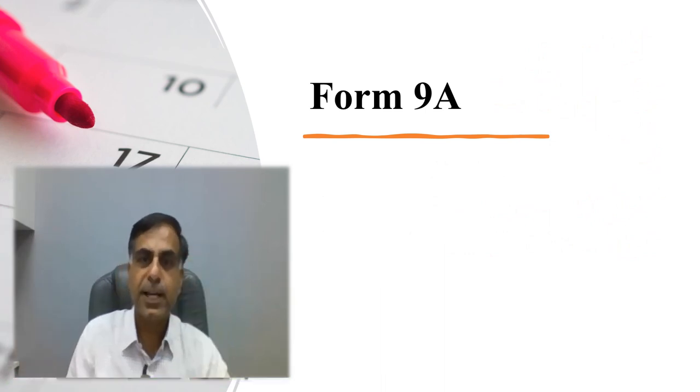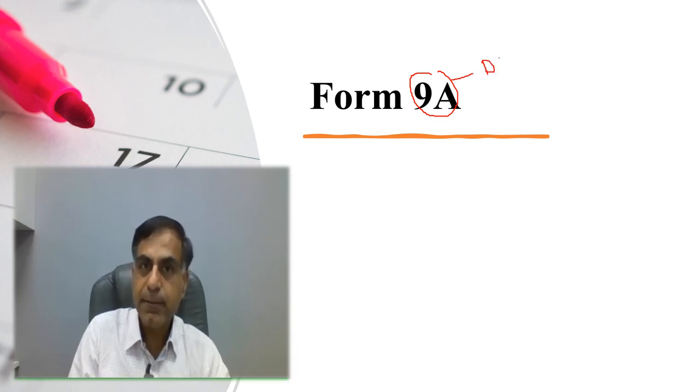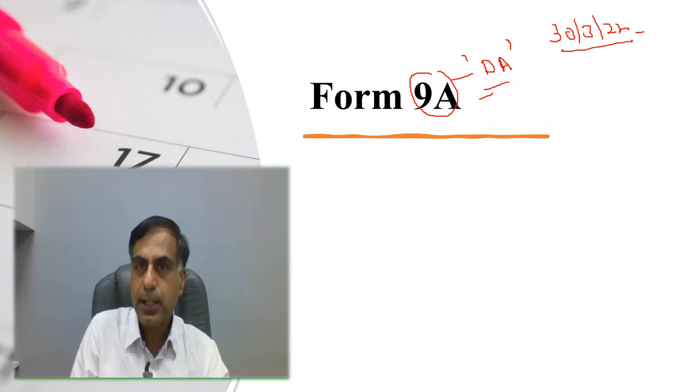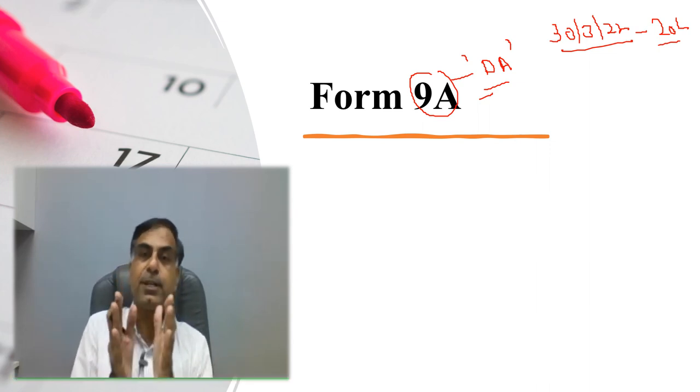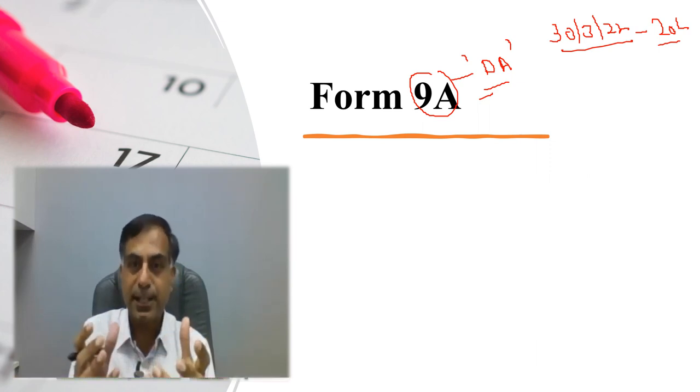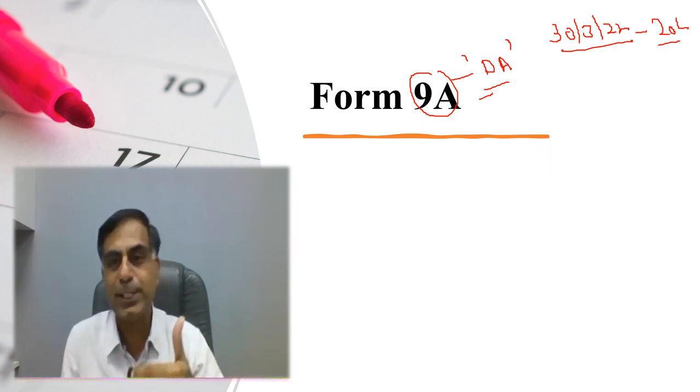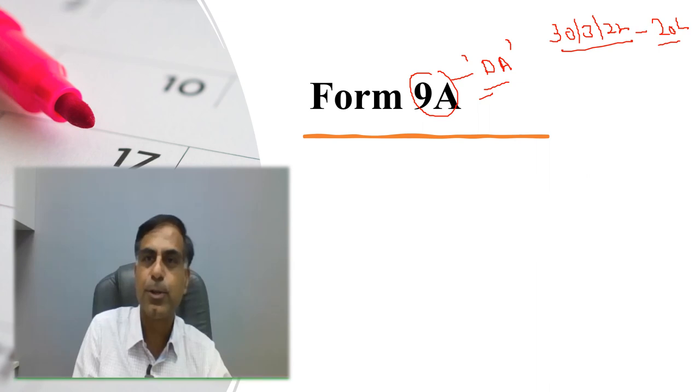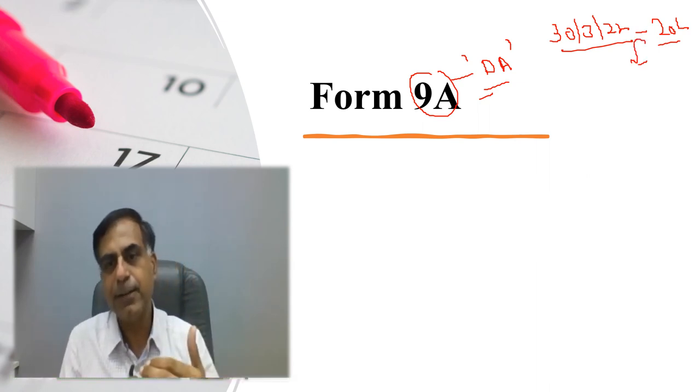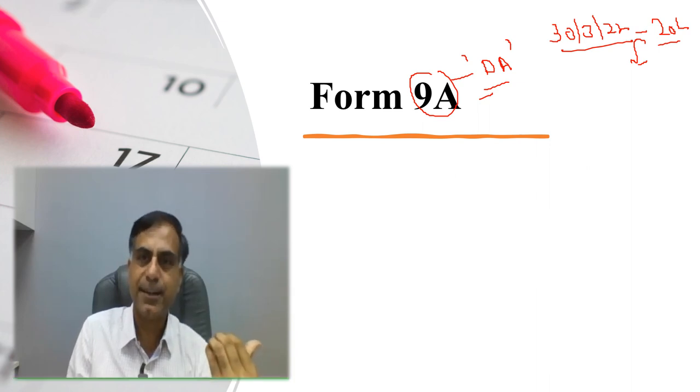Now I come to discuss with you form 9A, which is also a very important form. And technically, I would give it a name attached to deemed application concept. Now what is the deemed application concept? If I put it up through an example, say on 30th of March 2022, a trust received 20 lakh rupees donation. And in last moment when it is so received, it could not apply the amount immediately for charitable or religious purposes. And it is not so easy to spend the money in one single day because your financial year was closing on 31st of March 2022. So trust thinks that okay, we received it, but we will apply it probably in the next year.